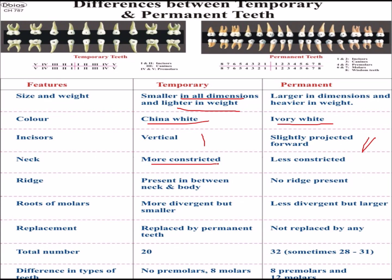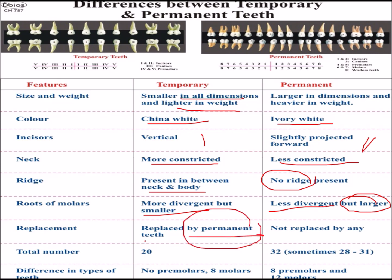The neck is more constricted in temporary teeth but less constricted in permanent. There is a ridge between the neck and body in temporary teeth but no such ridge in permanent. The molar root is more divergent but smaller in temporary, and less divergent but larger in permanent. Total number is 20 for temporary and 32 for permanent. There are no premolars in temporary teeth; permanent dentition has 8 premolars and 12 molars.